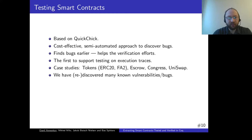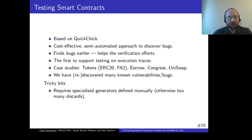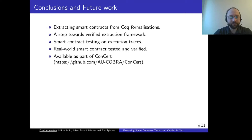We also contribute with a testing framework for smart contracts. The framework is based on QuickCheck and gives us a cost-effective semi-automated approach to discover bugs and aid verification efforts, since finding bugs earlier means proof efforts won't be wasted. This is also the first work to support testing on smart contract execution traces. Our studies show that we can discover many known vulnerabilities using our testing framework. However, some tricky bits remain: certain generators need to be defined manually, otherwise one can get too many discards.